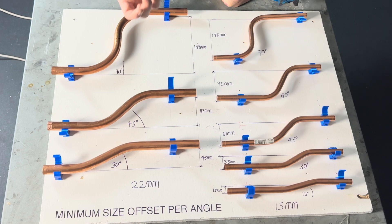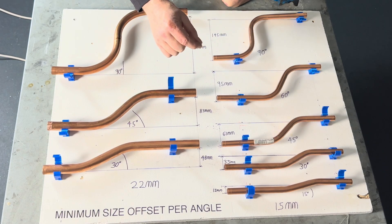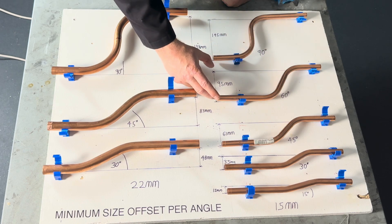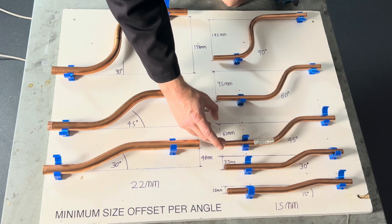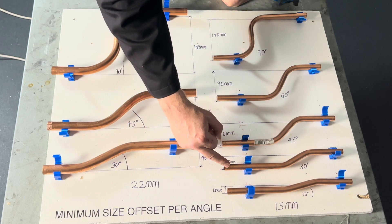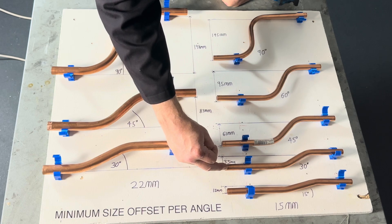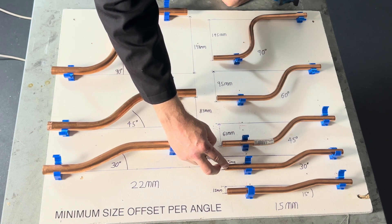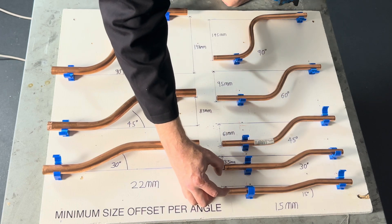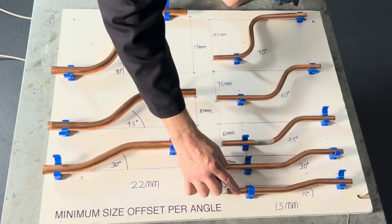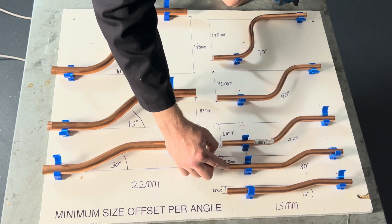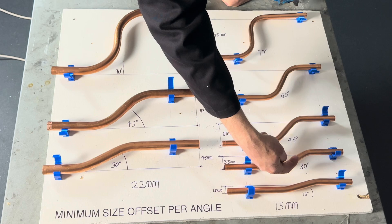Let's have a look at an example then. So we're about to bend 50 mm, 15 mm copper centre to centre. So if I was to bend it 60 degrees, the smallest offset I could achieve would be 95 mm. If I was to bend it 45 degrees, the smallest offset I could achieve would be 61 mm. If I was to bend my offset 30 degrees, the smallest offset I could achieve would be 35 mm. If we bend it 15 degrees, the smallest offset we can get is 15 mm. So we could either use 15 degrees or 30 degrees. But I always recommend to go for the steepest possible bend that will fit.